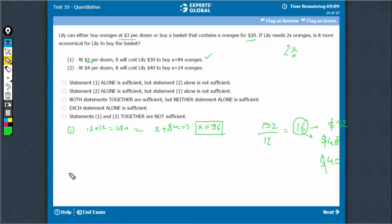Coming to statement 2 at $4 per dozen. So, in this case, $4 per dozen, that means 10 dozens, 120 is equal to X plus 24. Same value, X is equal to 96.